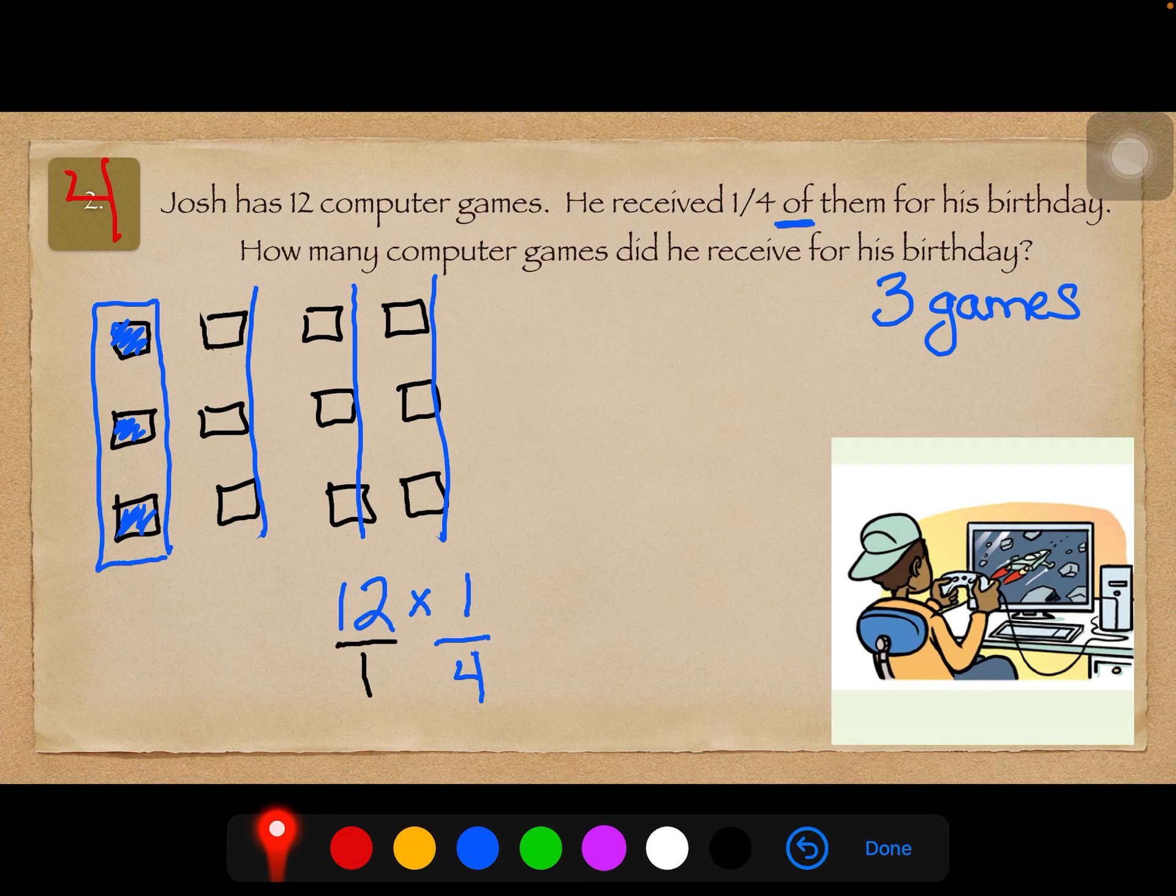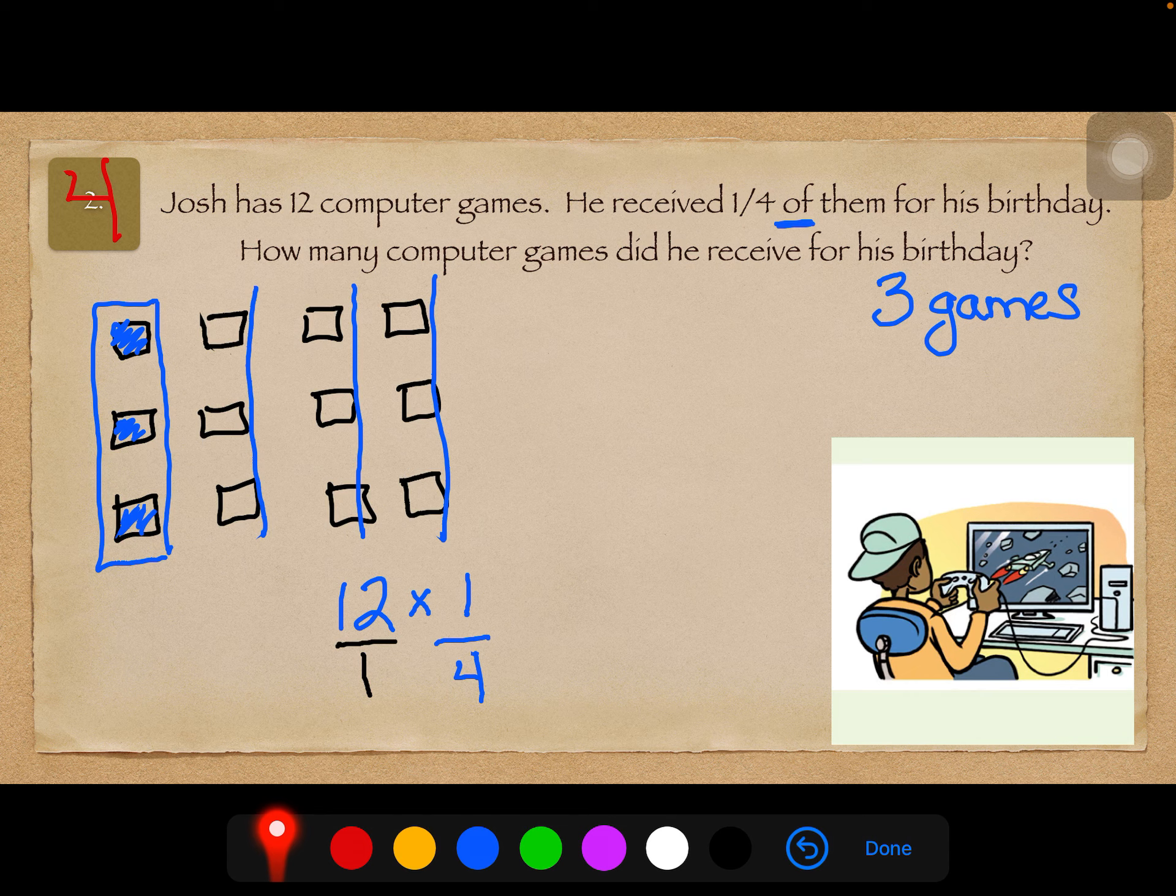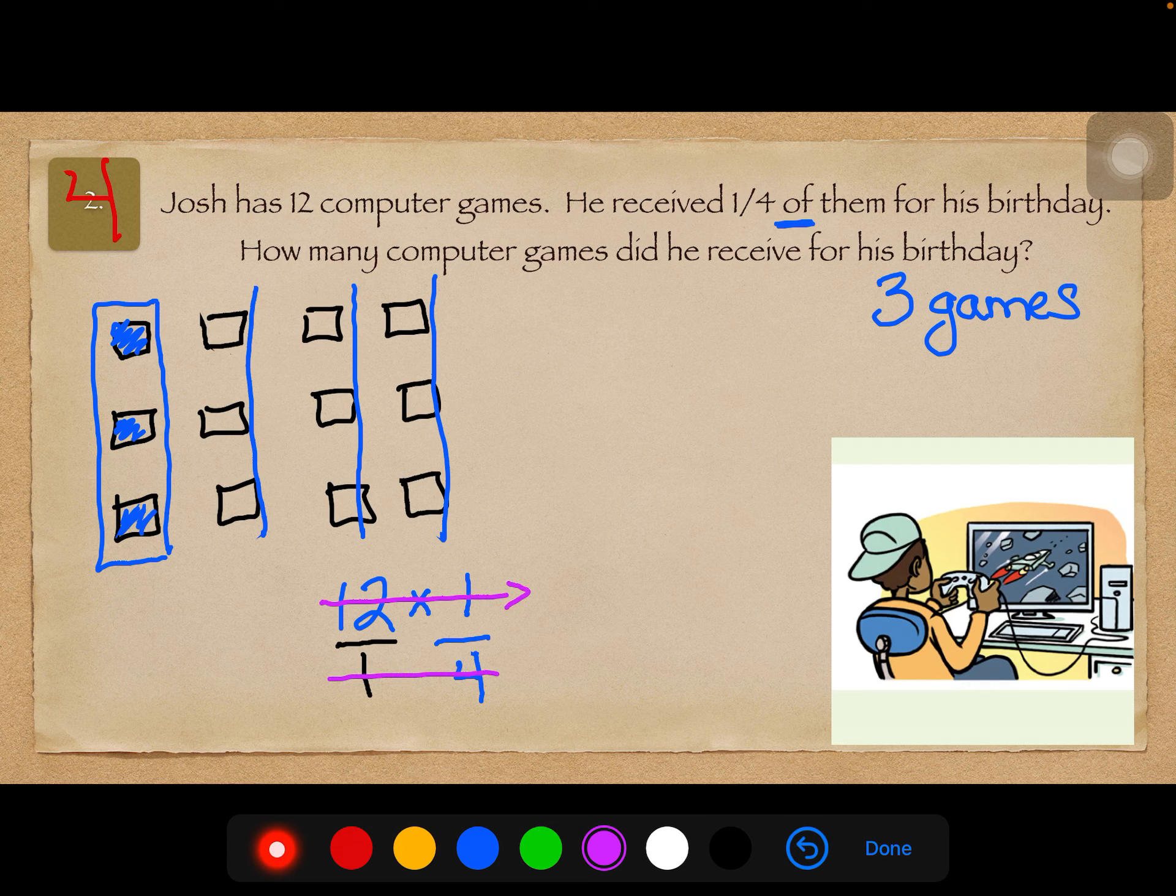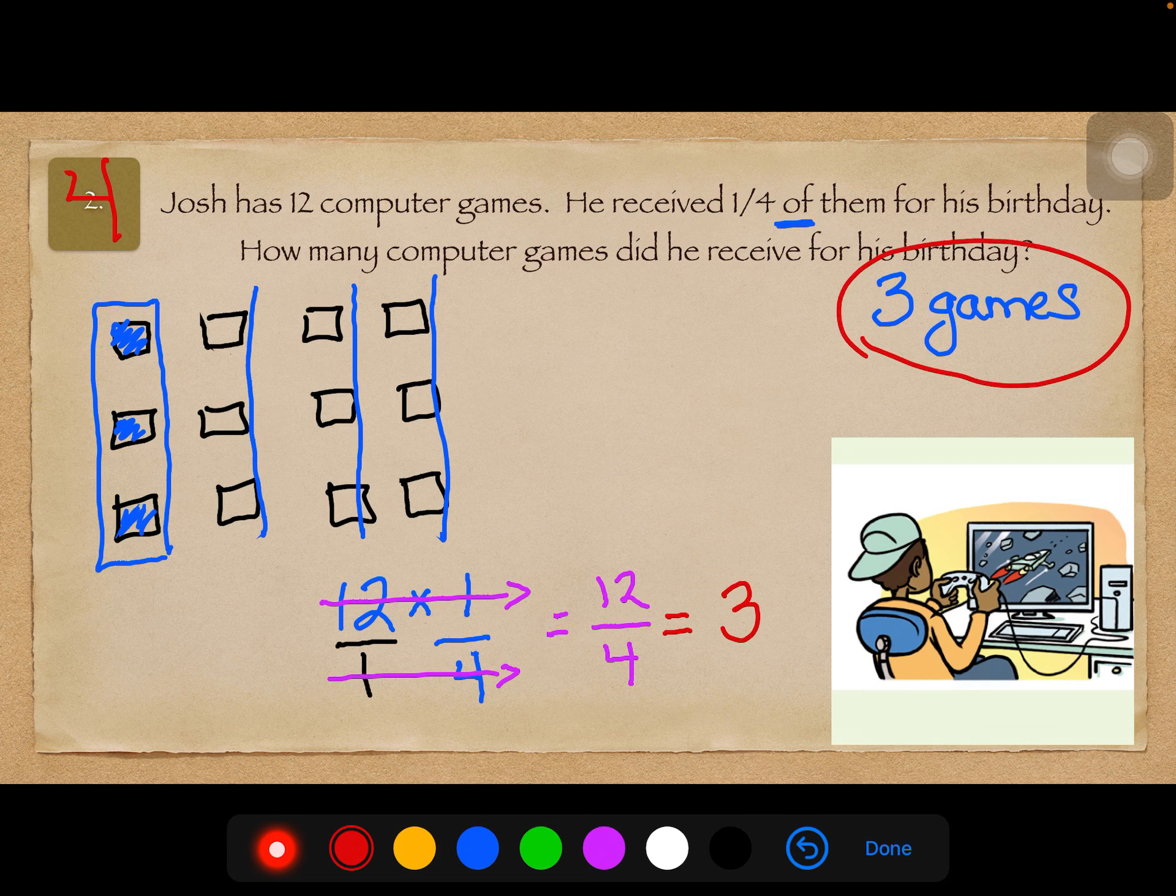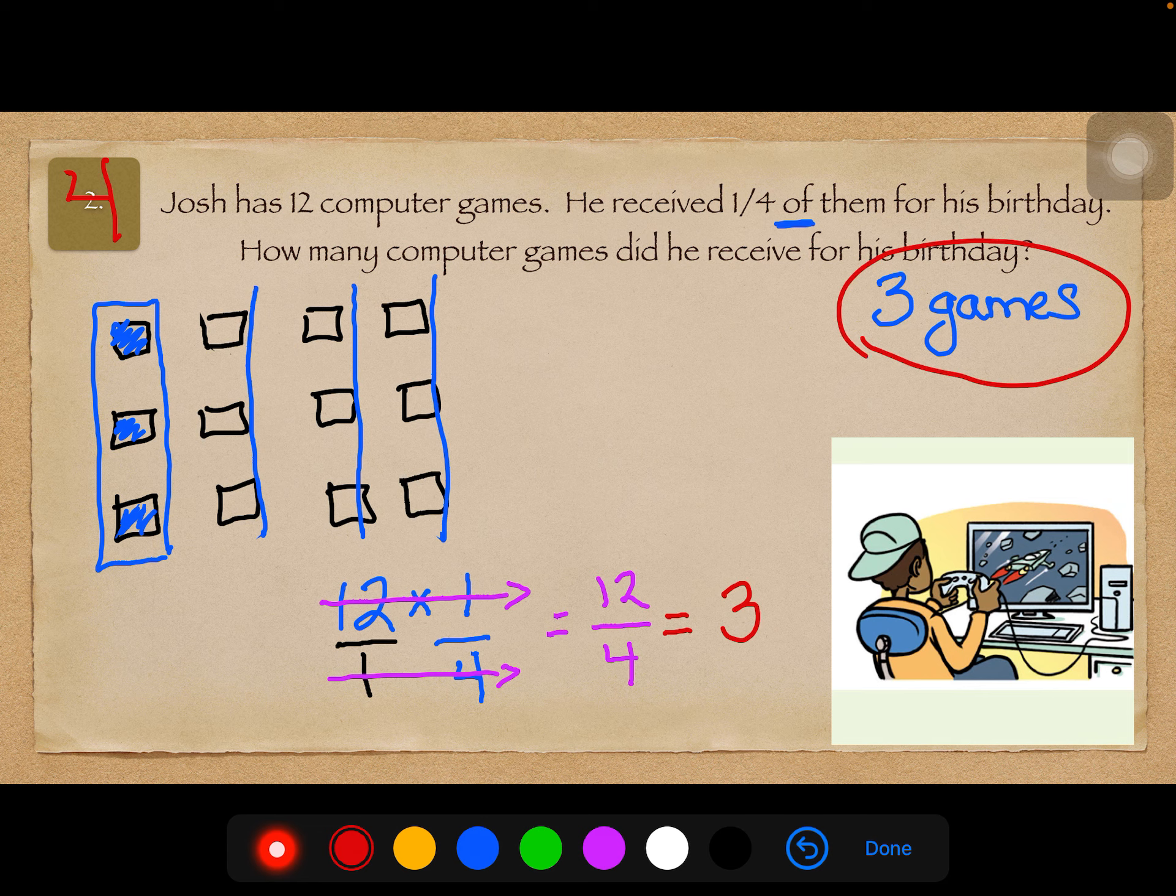Now if you remember a while ago, on one of our homeworks, we talked about just putting a 1 underneath a whole number to make it into a fraction. And from what we know about that, that means 12 divided by 1, which is a whole 12. So it's the same number, or it's an equivalent fraction. Now when you multiply fractions, and this is something we're getting to, we're going to go straight across. So 12 times 1 is 12, and 4 times 1 is 4. Now, from what we've been learning, we know that this means 12 divided by 4. And 12 divided by 4 is 3. So we were right in our guess with 3 games. Okay? And we'll be working on multiplying fractions and whole numbers in the coming weeks. So, 3 games is the correct answer.